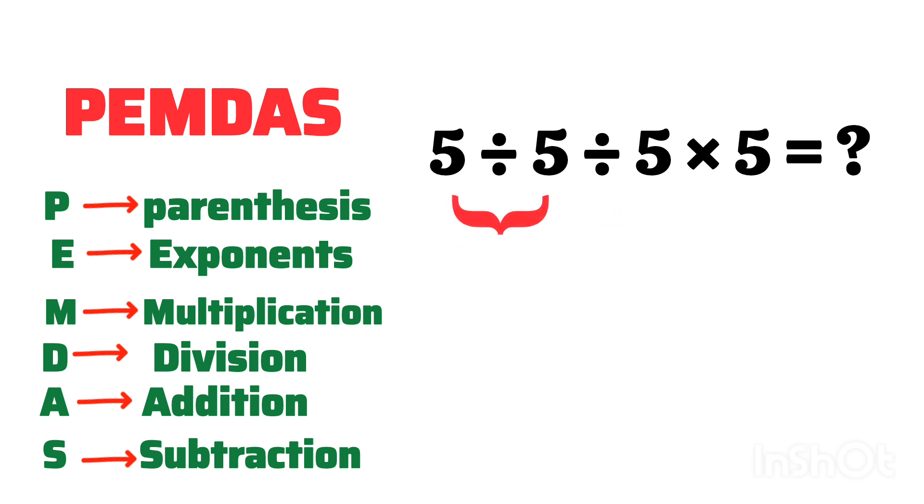So first we'll do this, which is 5 divided by 5 gives us 1, and then we'll rewrite the remaining expression, which is 1 divided by 5 times 5. So we'll rewrite this expression so that we can complete the operation.